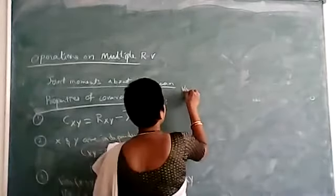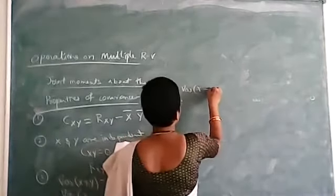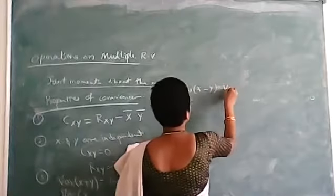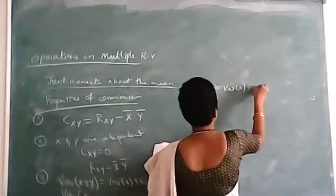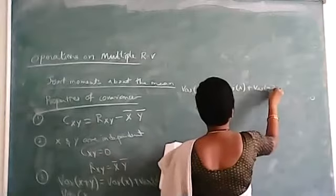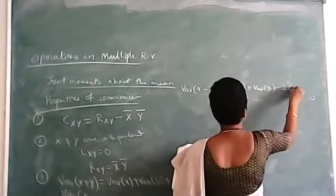And similarly, variance of X minus Y is equal to variance of X plus variance of Y minus 2C(X,Y).